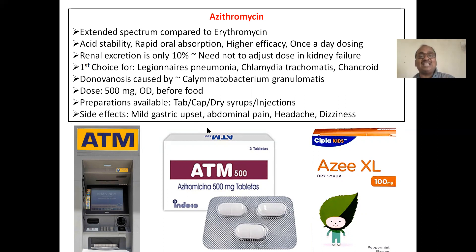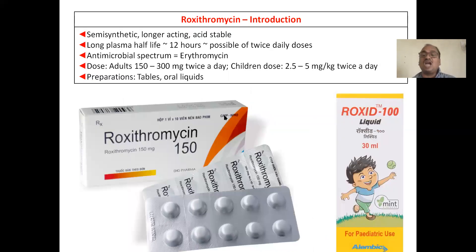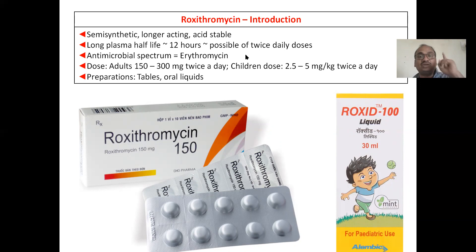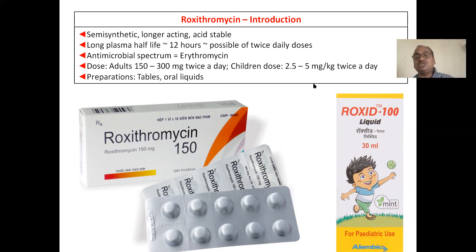Azithromycin side effects include mild gastric upset, abdominal pain, headache, and dizziness. Roxithromycin is a semi-synthetic, longer-acting, acid-stable macrolide with a long plasma half-life of 12 hours, making twice-daily dosing possible. Its antibacterial spectrum is the same as erythromycin. Adult dose: 150–300 mg; children: 2.5–5 mg/kg. Available as tablets and oral liquid.